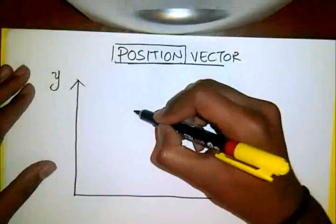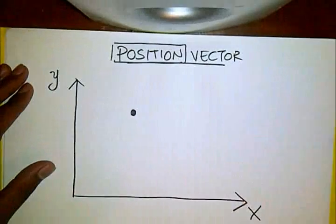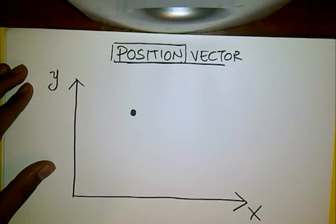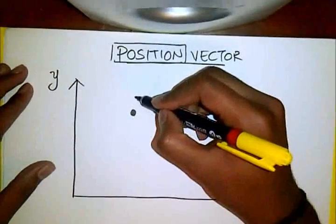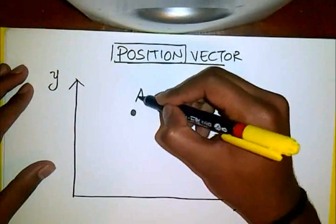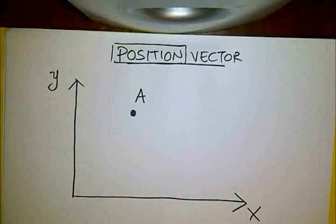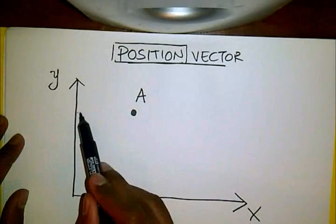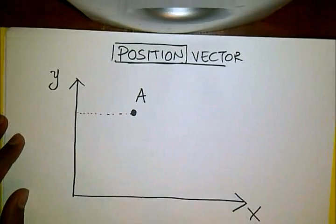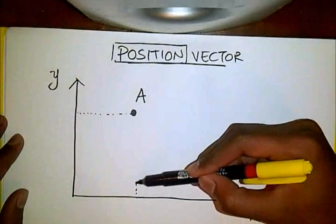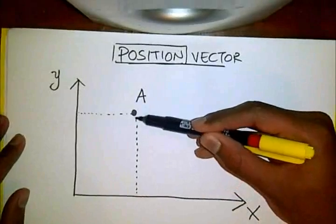Say I am at this position. I am going to call this position A. How would you define position A? You would say I am this far from the Y axis and I am this far from the X axis.